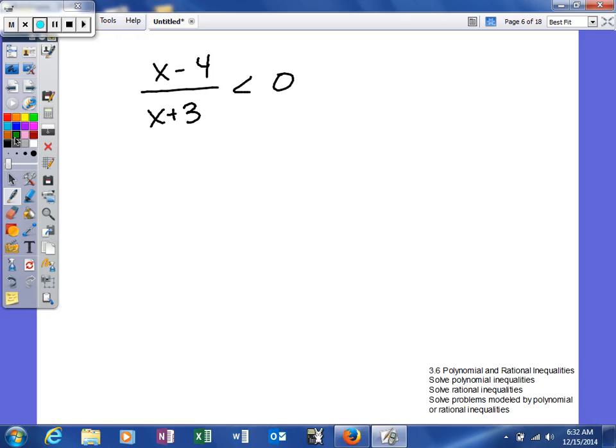So what we're going to do is we're going to try to find our critical numbers first. First thing we're going to do is find our zeros. To find your zeros, what you're going to do is set your numerator equal to zero and solve. Anytime you have a fraction, to get that fraction equal to zero, we'll set the numerator equal to zero.